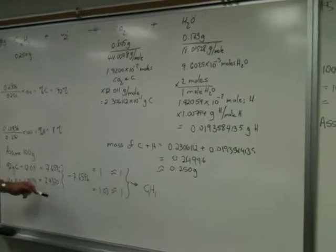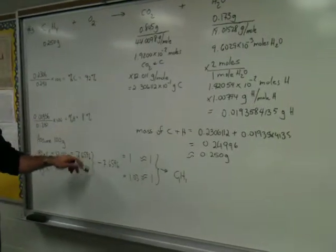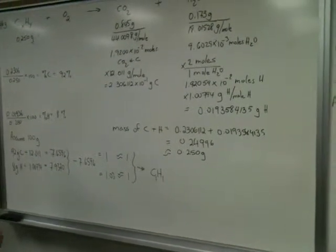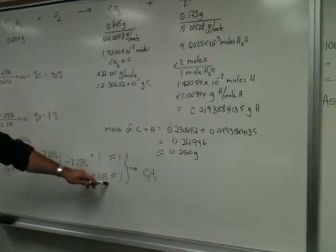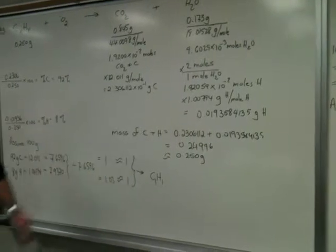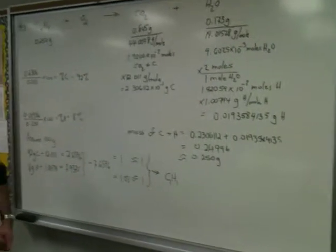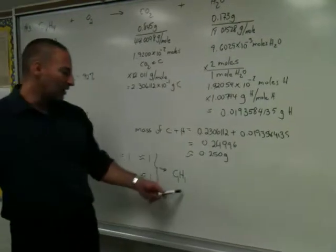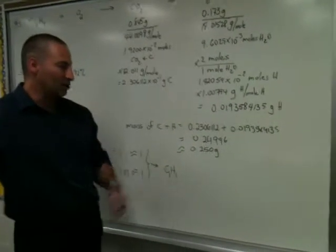I then take the lower of the two numbers, divide both of them by the lower of two numbers, and I get this proportion, 1 to 1.03. 1.03 is close enough to 1 that we can safely say that it's within experimental error. So we conclude that the empirical formula of this compound is C1H1.